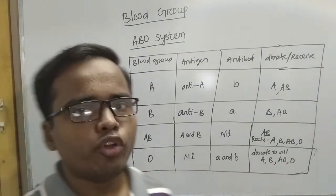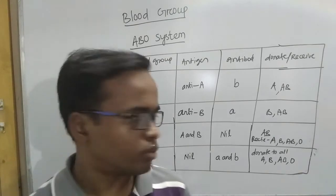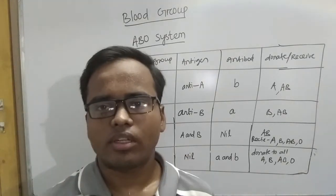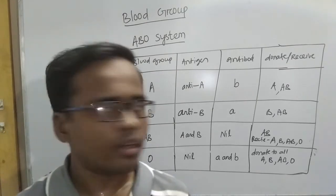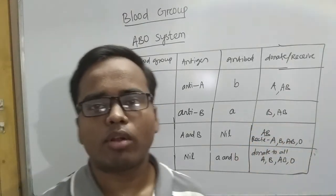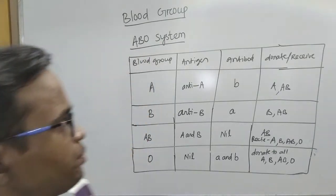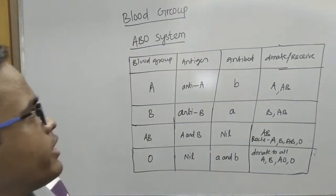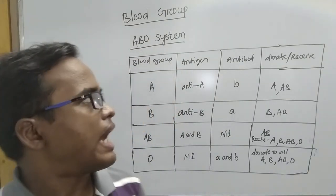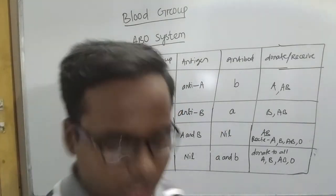O blood group is known as the universal donor, which can donate to all blood groups. AB blood group is known as the universal recipient, as it can receive from all blood groups. These are the key features of the ABO system. Next, let us discuss about the RH system.